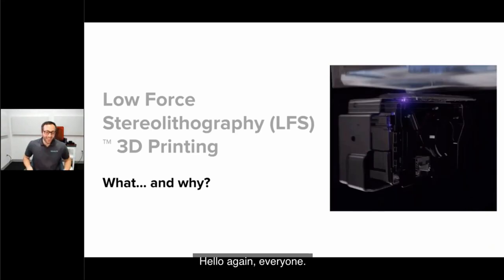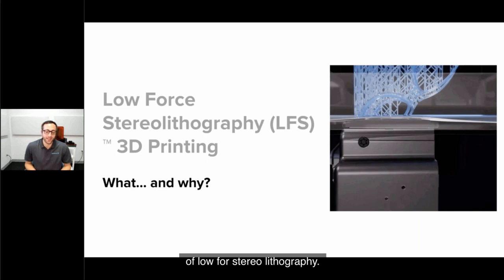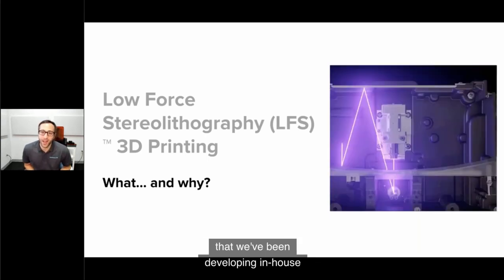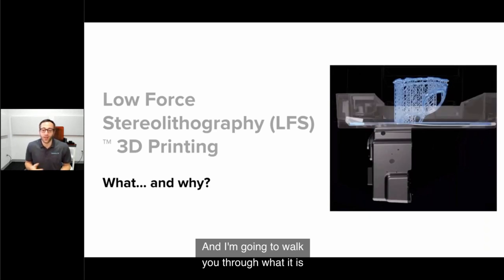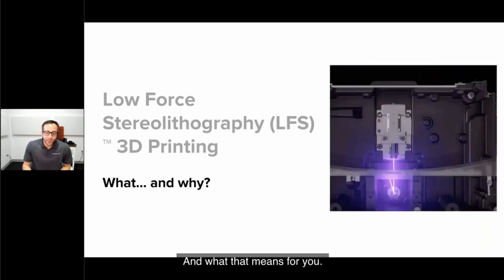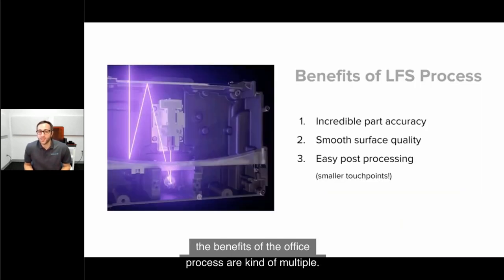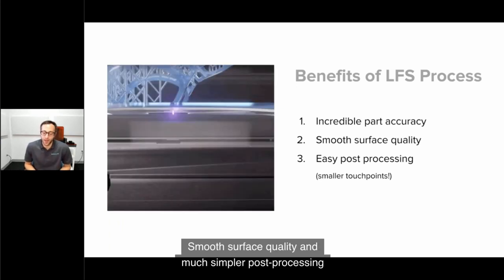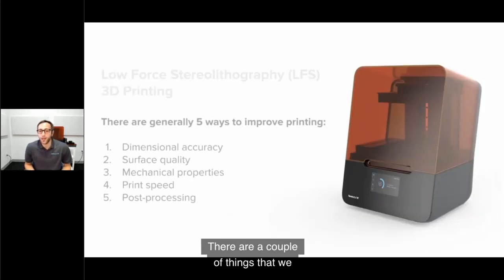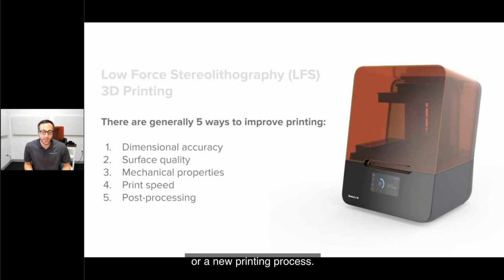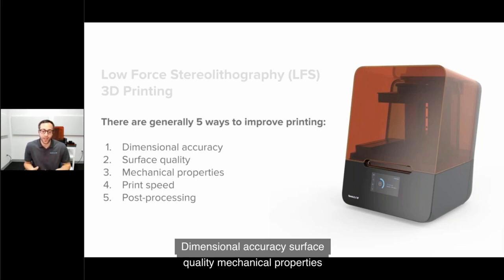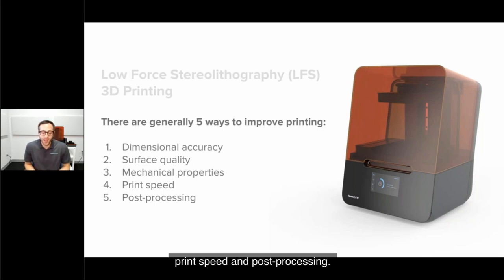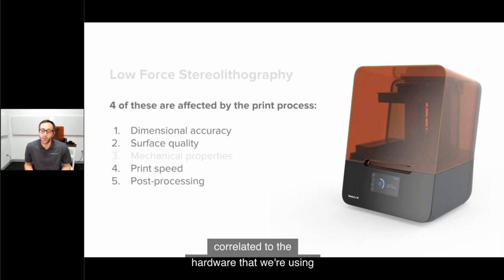I'm excited to share low-force stereolithography. This is an upgrade to stereolithography we've been developing in-house for the past three years. The benefits are incredible part accuracy, smooth surface quality, and much simpler post-processing. There are five ways we improve a printing process: dimensional accuracy, surface quality, mechanical properties, print speed, and post-processing. Four of these are directly correlated to the hardware.